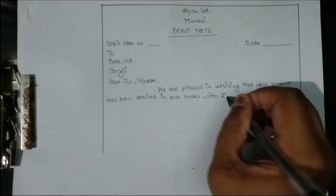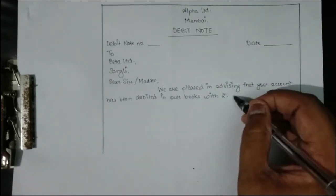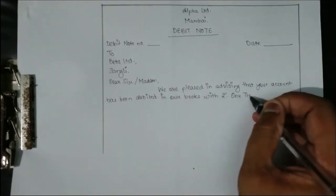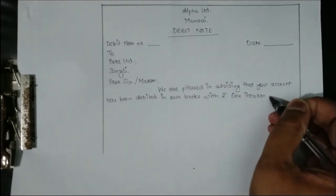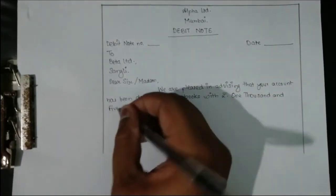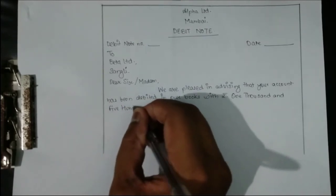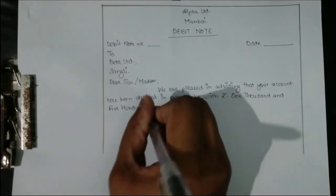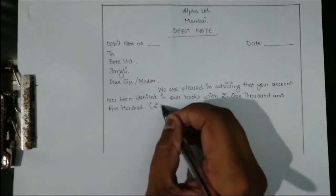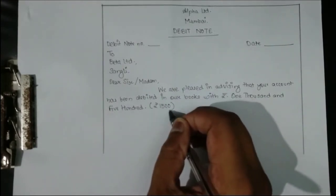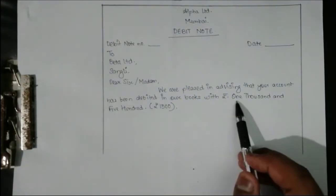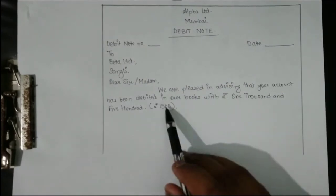We then write the amount — for example, rupees one thousand and five hundred — with the figures in brackets. You can also do this vice versa, writing the figures outside the bracket and the words inside; either format is acceptable.